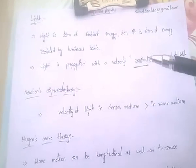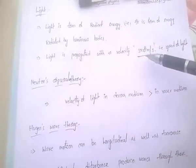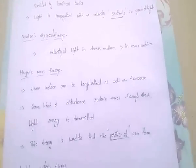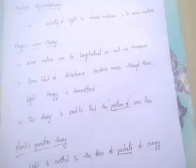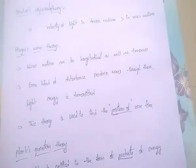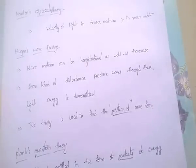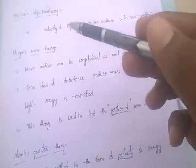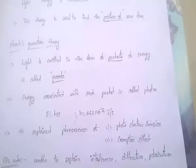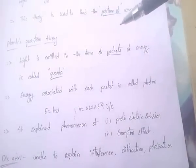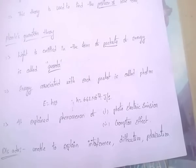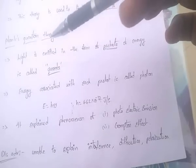To recap: light is a form of radiant energy with velocity 3 into 10 power 8 m/s. Newton's theory states velocity of light is greater in denser medium. Huygens wave theory says wave motion can be longitudinal and transverse, disturbance produces waves, and this theory finds wave form position. Planck's quantum theory: light emitted in packets called quanta, E = H nu, H = 6.62 into 10 power minus 32, and it cannot explain interference, diffraction, and polarization.